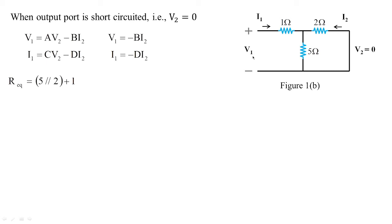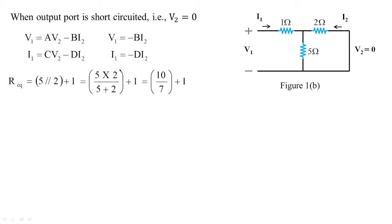Looking from the input side with the output shorted, the 5-ohm and 2-ohm resistors are in parallel, and that parallel combination is in series with the 1-ohm resistor. So R_eq = (5 ∥ 2) + 1 = (10/7) + 1 = 17/7 ohms. Therefore V1 = R_eq · I1 = (17/7)I1.